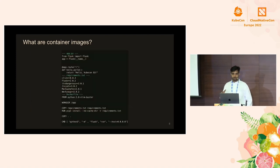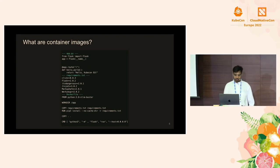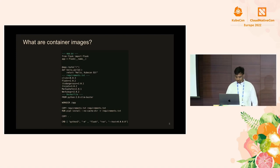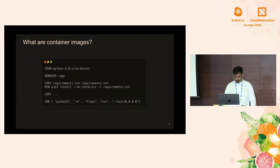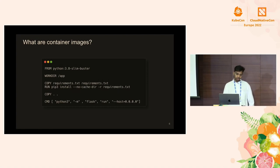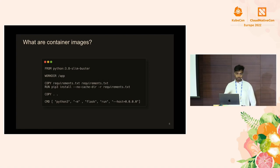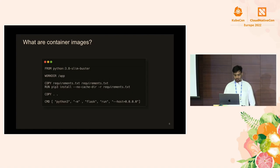To put that into perspective, throughout the talk we'll be using this example application. It's a fairly simple Python web application with a requirements.txt that describes the dependencies. I also have a simple Dockerfile, which we'll be using for our first case study. We're using Dockerfile because that's what most people would be familiar with, and it helps us understand various concepts.